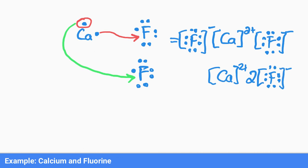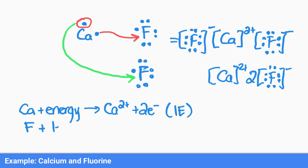Now we could also write out equations for what is happening here. For the ionization energy for calcium, we have calcium plus energy produces a calcium two plus ion and two electrons. That's our ionization energy. For fluorine, each fluorine is going to gain an electron, and that's going to produce an F minus and also release some energy.